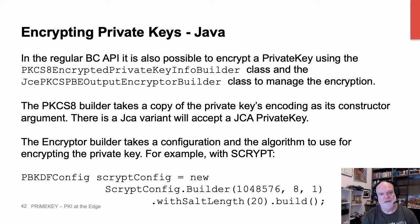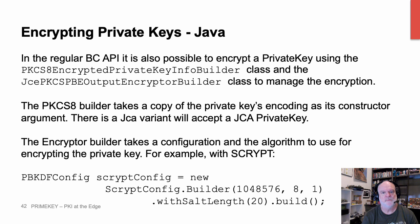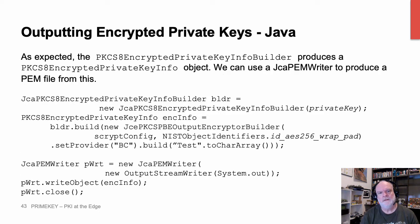The PKCS8 builder can take a copy of the private key's encoding as its constructor argument. Alternatively there's a JCA variant which will accept the JCA private key directly — it simply passes the encoding of the JCA private key back up to its parent. The encrypted builder takes the configuration and the algorithm to use for encrypting the private key. For S-Crypt the configuration is the standard one, basically the same as what we were seeing in the Kotlin API when the private key was encrypted using S-Crypt.